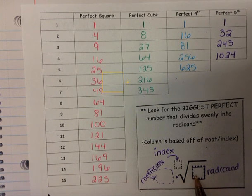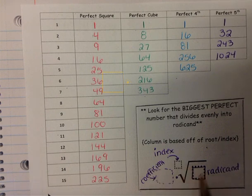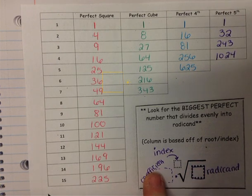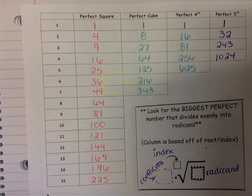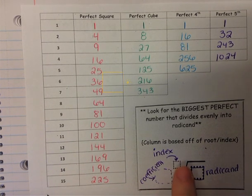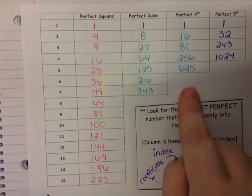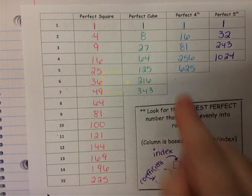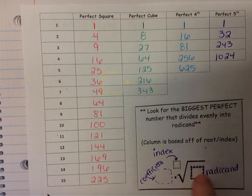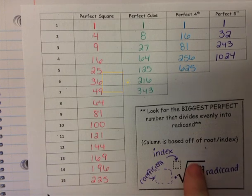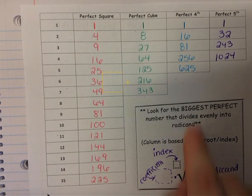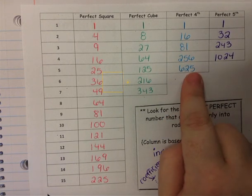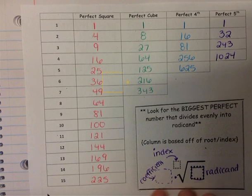The coefficient is not inside, so we don't do anything with it until we have simplified the radical. When we simplify radicals, we'll be able to bring numbers out of the radical and then multiply that by anything already outside. So when we have a 4 in the index, we look at the perfect fourths column only and see if any of those numbers divide evenly into the radicand, taking the largest one possible. We'll do some examples of this.